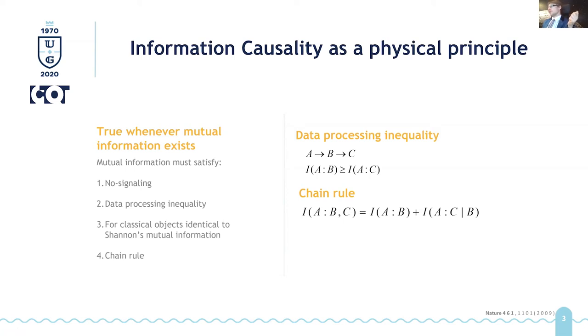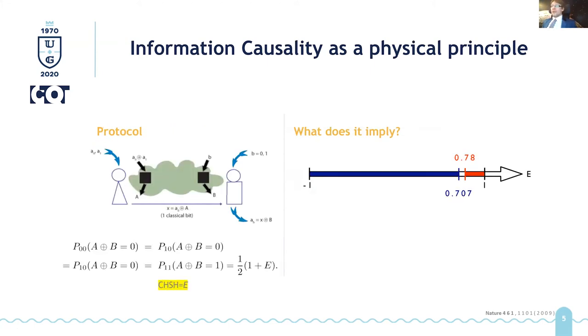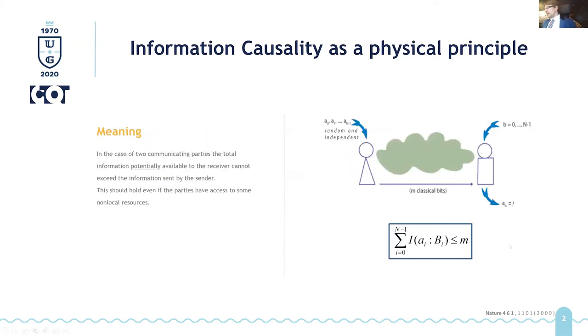And the final is the chain rule. So basically the chain rule says that if you look at what information A has about B and C, then it should be equal to all the information A has about B plus all the information A has about C conditioned on B. And if these properties are satisfied, then you can derive this thing which I have in this blue rectangle here.